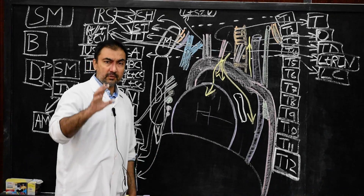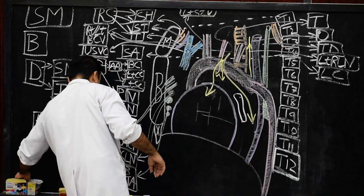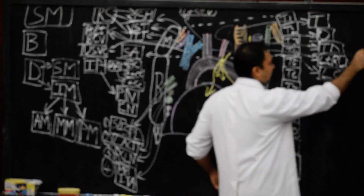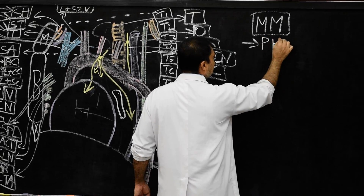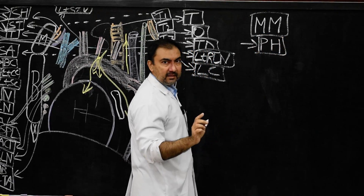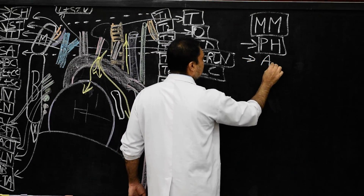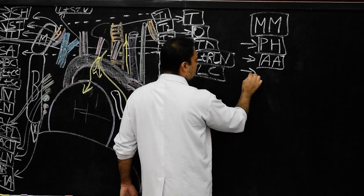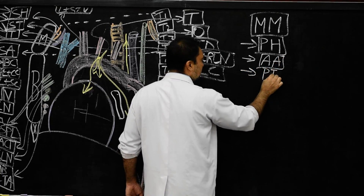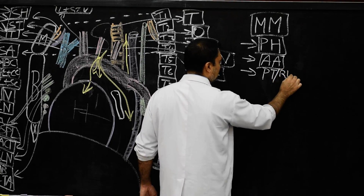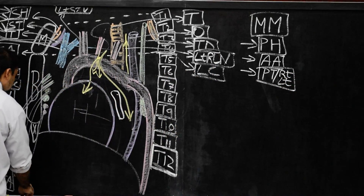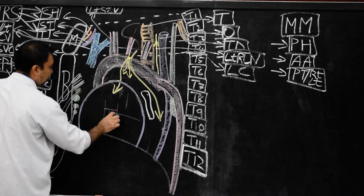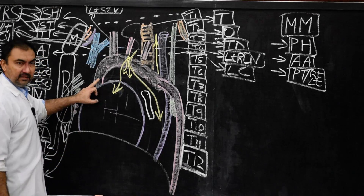Now we come to middle mediastinum. In the middle mediastinum, we are going to draw the structures also. The first structure will be pericardium including the heart. Please note down — first structure: pericardium including the heart. Second structure will be ascending aorta.